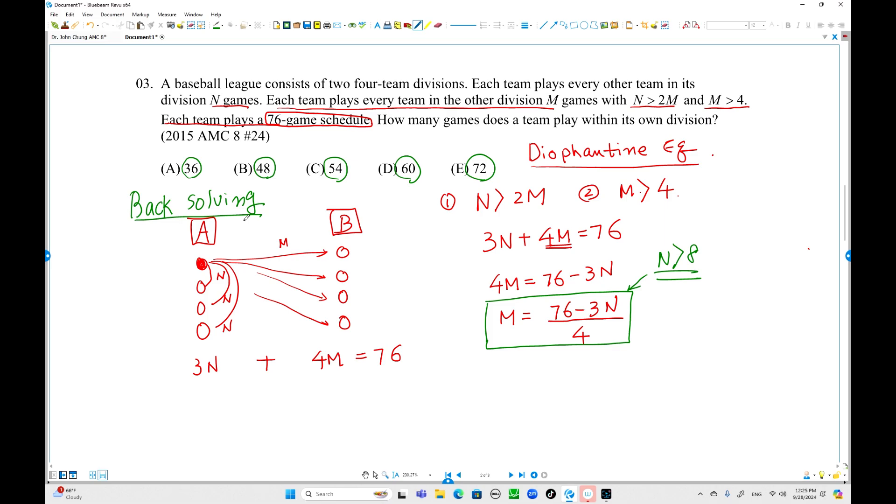Because we know that the value of N should be integer. In each division, if total is 36, that's 3N equals 36. If this is 36, we can check it out. M equals (76 minus 36) over 4, that's 40 over 4 equals 10. So M is 10, N equals 12. Using this result, check it out: M is greater than 4? Yes. N is greater than 2 times M? This is 20, this is 12. 12 is not greater than 20. So this is not working.